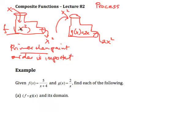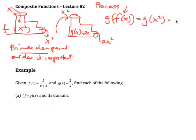If you look at this particular case, applying f first to get x squared, and then applying g to the result — notice that g is being applied to x squared, and g is doubling it, so we end up with 2x squared. Notice that we're reading this from right to left, which is opposite to what we normally do. So f is applied first to x, then g is applied to the result of that.